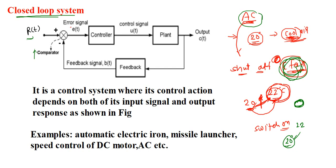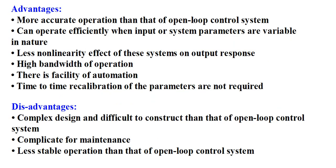That is our closed loop system. By comparing input and feedback signal, it generates an error signal and gives it to the controller. After processing, the output is obtained. On the basis of the error signal, a feedback signal is produced and the system works continuously and automatically when the AC is on. Examples of closed loop system include electric iron, missile launcher, speed control of DC motor, and air conditioner.